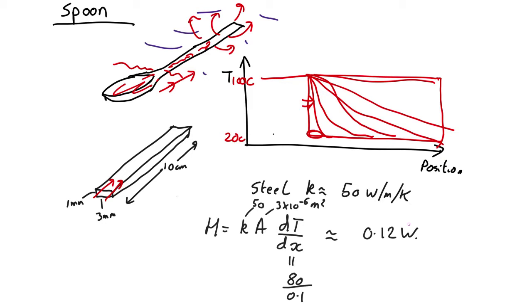So it's not a huge heat flow. This is, of course, an approximation. Once the tip of the spoon is warm, it'll be less than that. It'll be more to begin with, but only in the first part. But it's a rough estimate of the overall value.